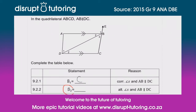Now let's look at D2. They've said to us that alternate angles are equal, and AB is parallel to DC. Let's have a look — D2 is this one over here, and we know that alternate angles use the Z-shape.